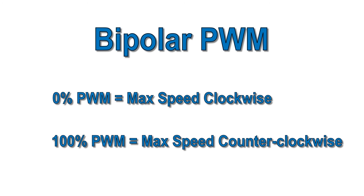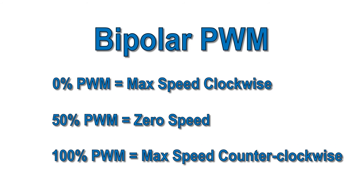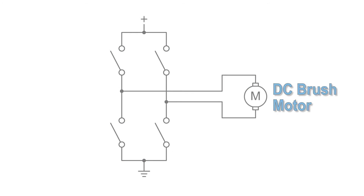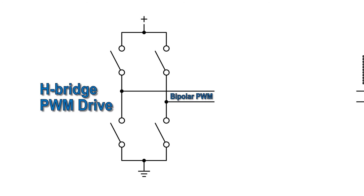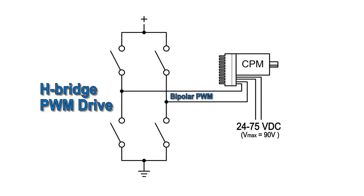Finally, ClearPath has a bipolar PWM mode, where zero PWM and 100% PWM correspond to max speed in opposite directions, and 50% means zero speed. This mode is perfect for those of you who want to replace brush motors powered by H-Bridge PWM drives without having to change any software. That's because H-Bridge drives naturally output bipolar PWM. You just hook the drive output to ClearPath's PWM input, and you're done.